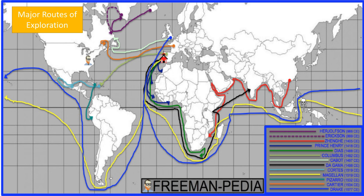This map shows the major routes of exploration. You've got all the major players from different nations: Ericsson, Zheng He, Prince Henry's routes, Da Gama, Cortez - every major route for exploration is on this map. You can see how the majority of exploration happened around Africa and then into India and the Indian Ocean, not over to the Americas. There wasn't a whole lot going to the Americas, even though we place so much emphasis on it.